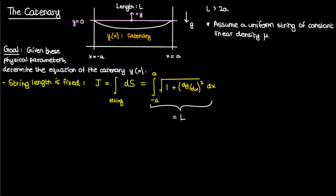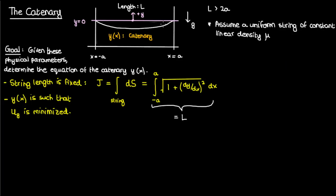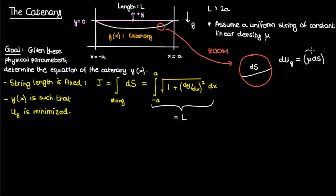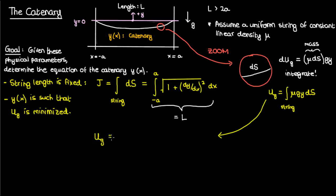We can use this principle to formulate equations for our catenary. We say that the shape of our catenary is such that the total gravitational potential energy UG of the string is minimized. To compute UG, we zoom in and take an infinitesimally small segment of the string of length ds. The gravitational potential energy of this small segment is the mass — which is mu ds — times the gravitational acceleration g, times the height y. To get the total gravitational potential energy, we integrate over the entire string. We can rewrite the infinitesimal arc length ds in terms of x and y as before.